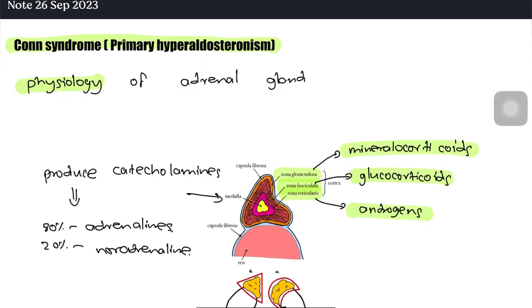Hello, welcome to my YouTube channel. Today we are going to discuss Conn's syndrome, which is also known as primary hyperaldosteronism. First of all, we need to understand the physiology of the adrenal gland. There are two parts which are known as adrenal cortex and adrenal medulla.